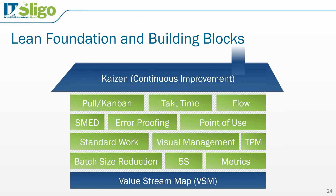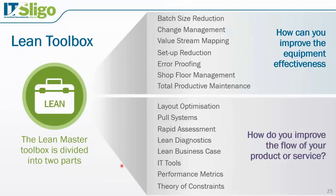Looking at other lean tools, there is the Lean Master role, somewhat like a Six Sigma Black Belt Master but not as popular — it's largely integrated into the Six Sigma Black Belt. This includes looking at equipment effectiveness, which is useful for organizations with a lot of capital investment. Additional tools cover error proofing, flow of your product or service, layout optimization, pull systems, rapid assessment, and performance metrics.